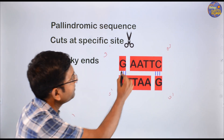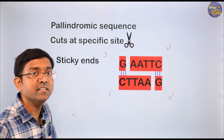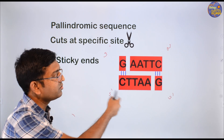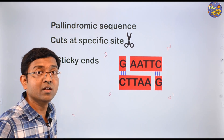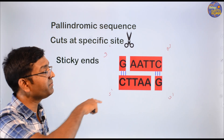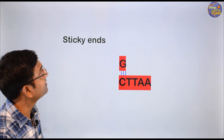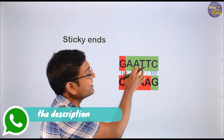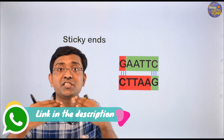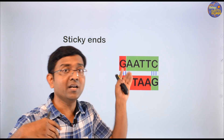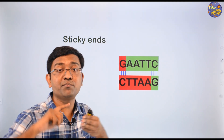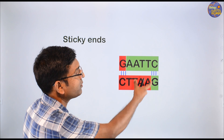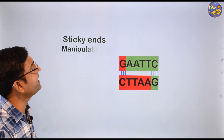After cutting, sticky ends are formed. Why are they called sticky ends? For example, if one DNA is cut with restriction endonuclease, and another DNA has the same palindromic sequence and is cut with the same restriction endonuclease, the resulting sticky ends of the two different DNAs can be attached to each other. That is why they are called sticky ends — two different DNAs having the same sequence, cut by the same restriction endonuclease, can be joined through their sticky ends.